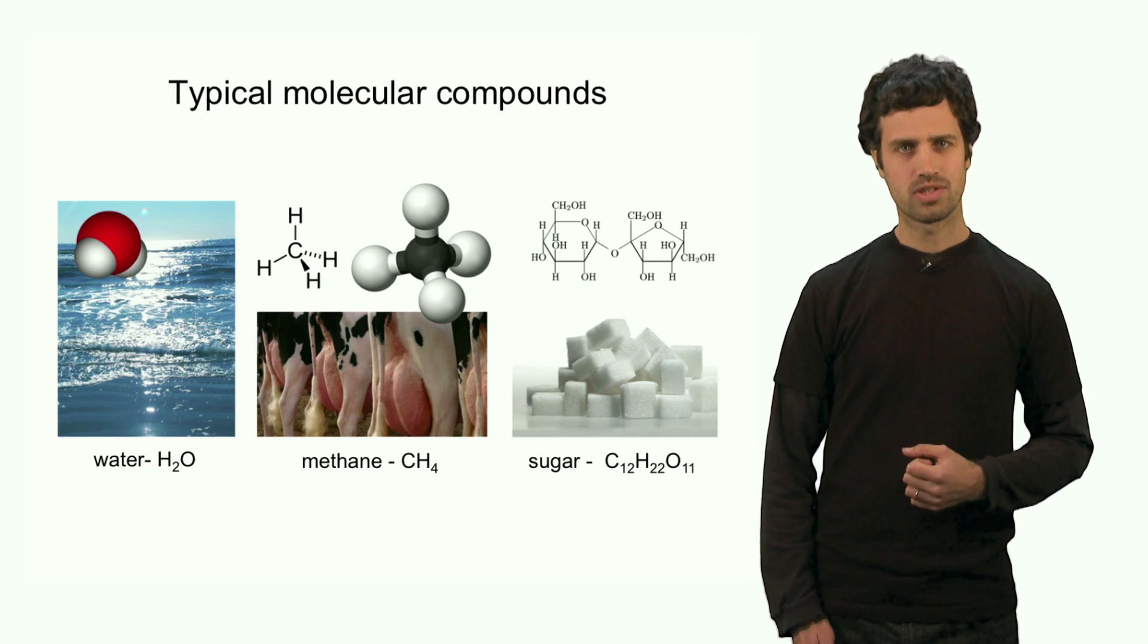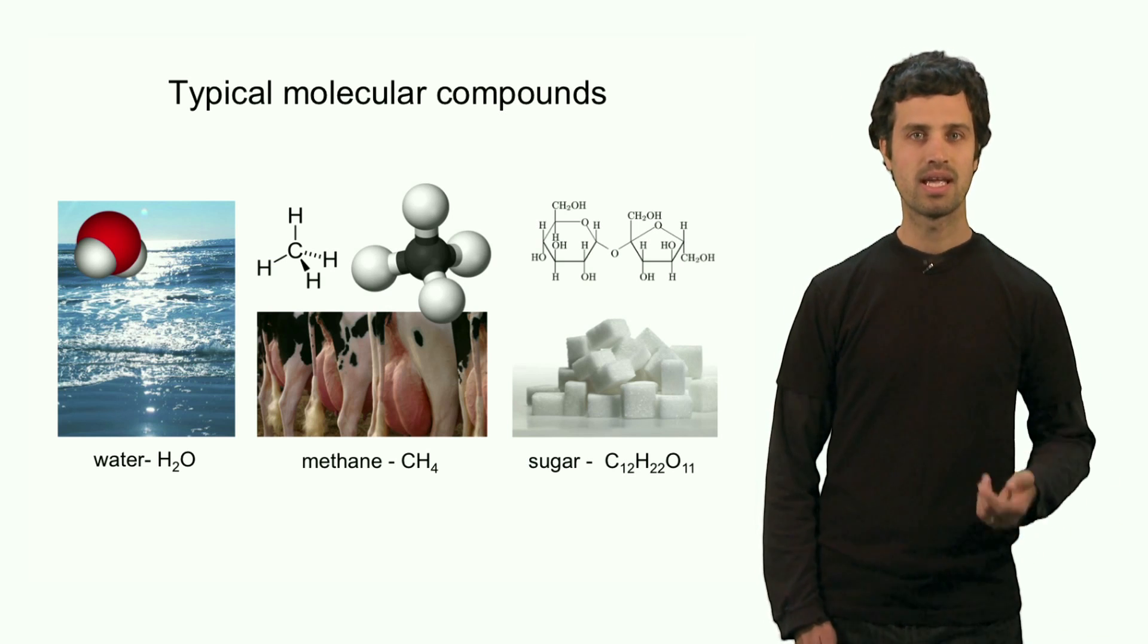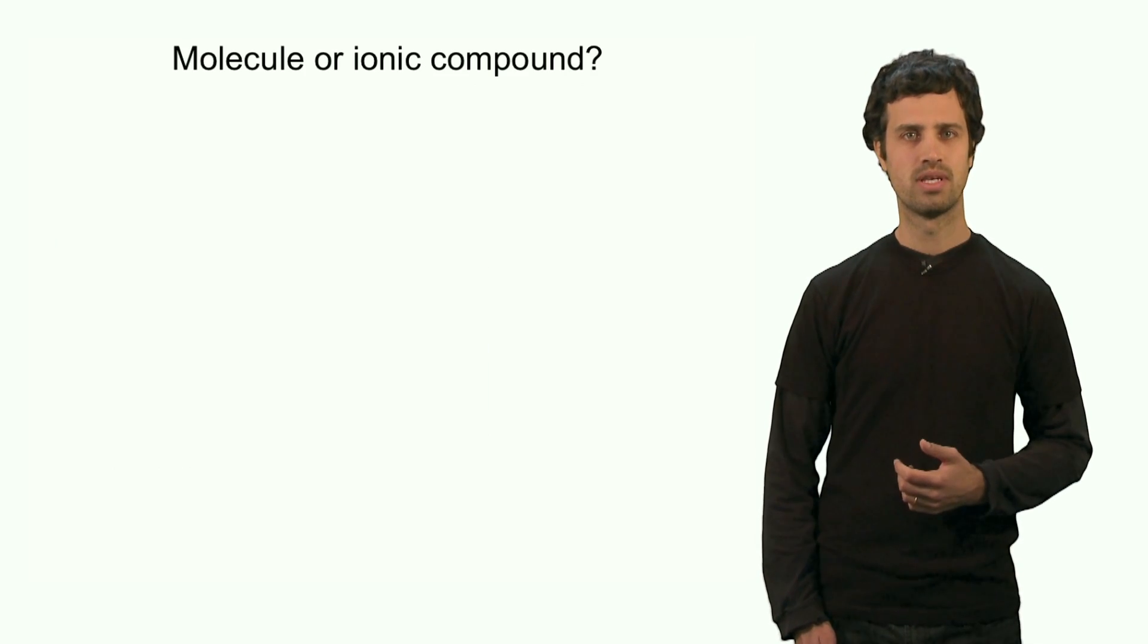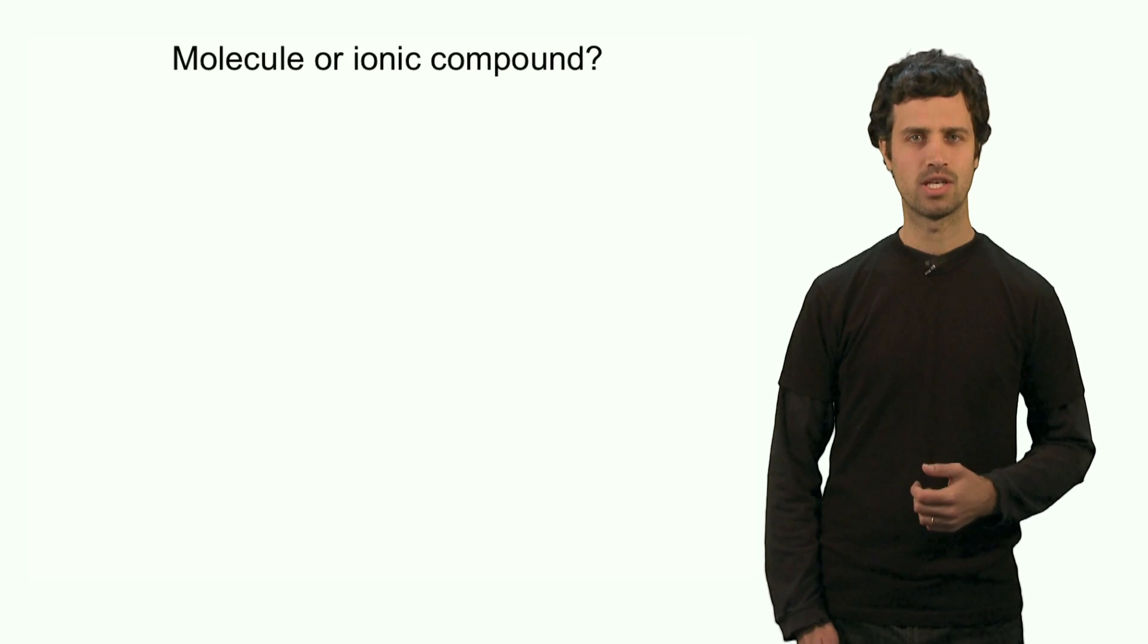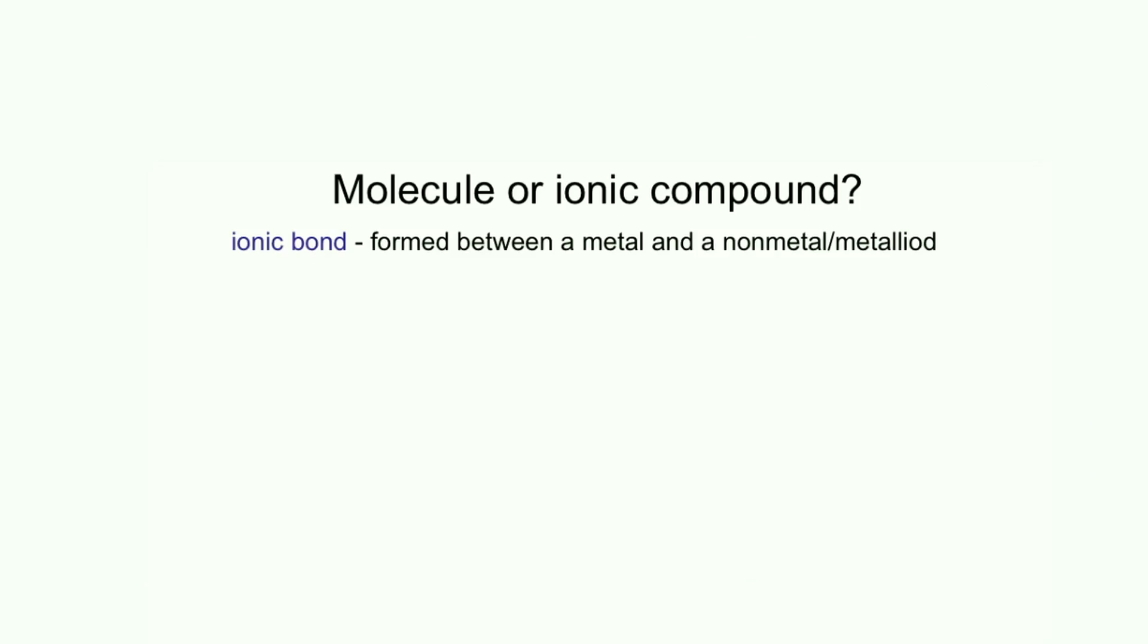A good question to ask ourselves is when is a bond covalent and when is it ionic? Can we tell? Well, here is a simple set of rules that will get us a long way in determining whether the bond is ionic or covalent. An ionic bond is formed between two elements of which one is a metal and the other one is not a metal. If it's not a metal, the element is a nonmetal or a metalloid.